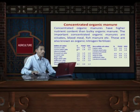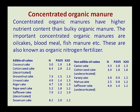We will talk about concentrated organic manures. Concentrated organic manures have higher nutrient content than bulky organic manures. Important concentrated organic manures are oil cakes, blood meal, fish meal, etc. These are also known as organic nitrogen fertilizers because the nitrogen content in these organic manures is high.